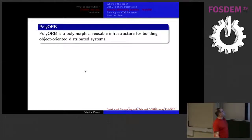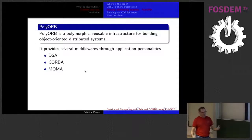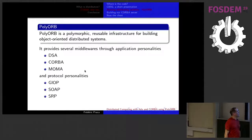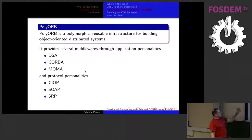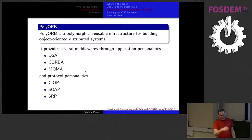For this, we will use PolyOrb — a Polymorphic Reusable Infrastructure for Building Object-Oriented Distributed Systems. It provides several middlewares through what we call application personalities. With PolyOrb you can do DSA, CORBA, and MoMA — Message-Oriented Middleware for Ada. Then there are protocol personalities — how you use the network. GIOP is the one we will use: Generic Inter-Orb Protocol, with implementations such as IIOP (Internet Inter-Orb Protocol), SSL-IOP, DIOP, MIOP. The last one is SRP — Simple Request Protocol — which is based on HTTP.